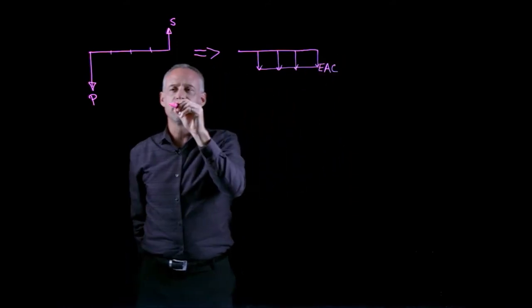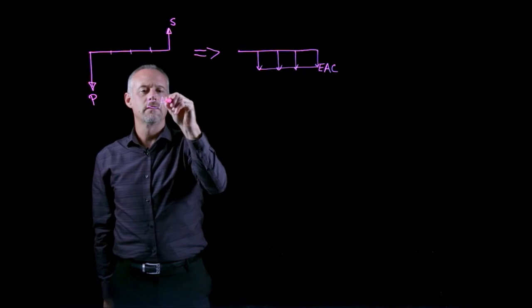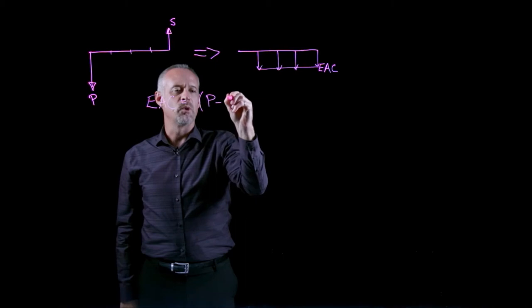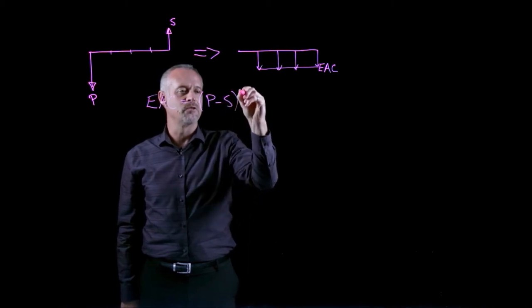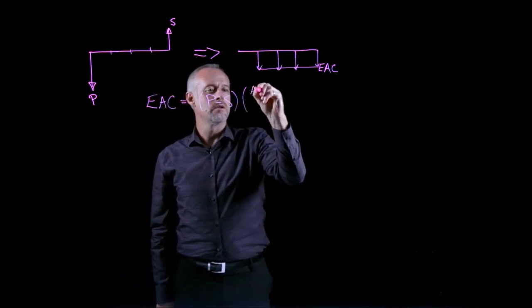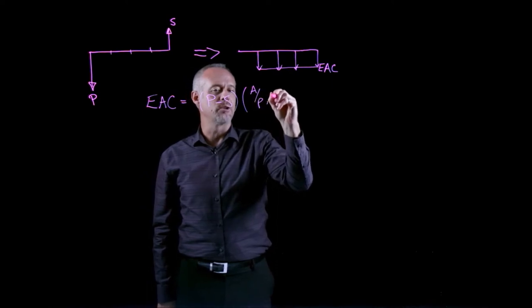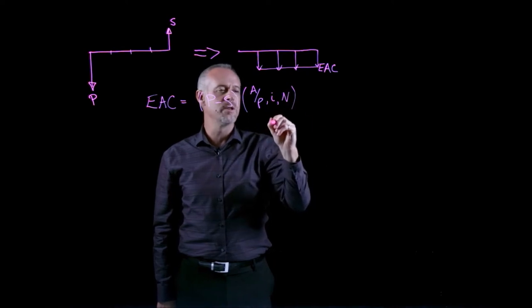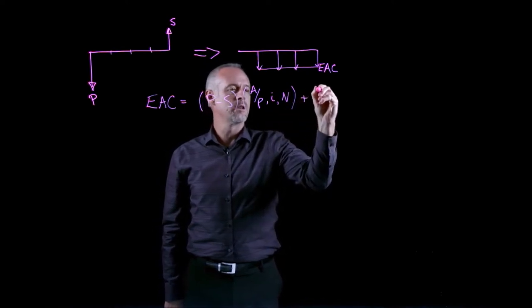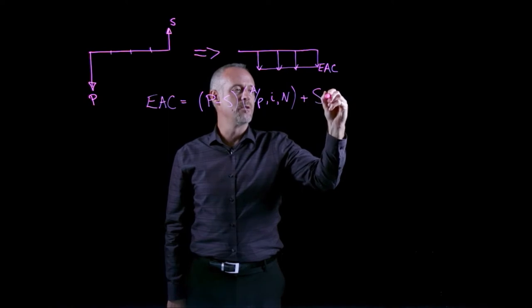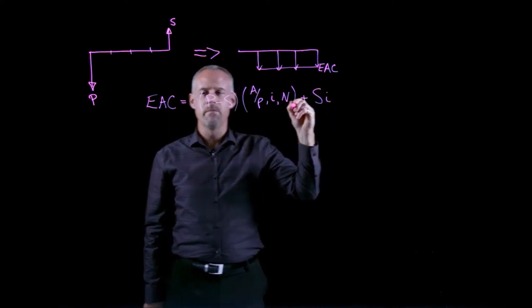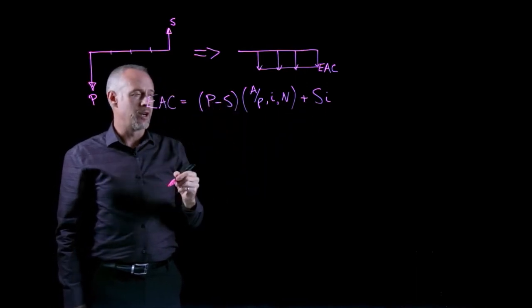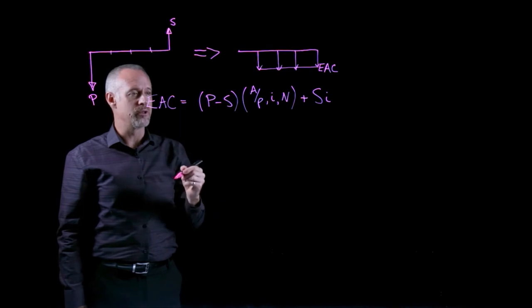And the formula we use for that looks like this. The EAC is equal to the purchase price minus the salvage value times the a given p factor for a certain interest rate and a certain number of ownership periods, plus a little correction factor, salvage value times the interest rate. And if you're interested to see where this formula comes from, most finance or engineering economics texts will show you the derivation of this.